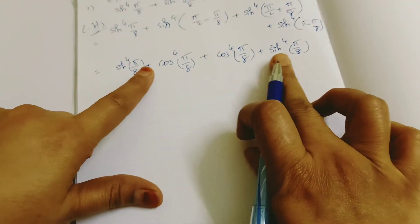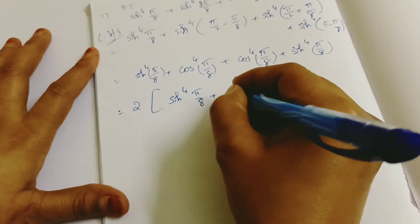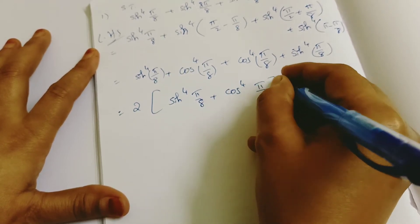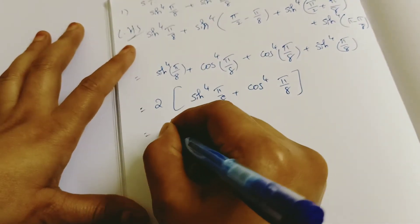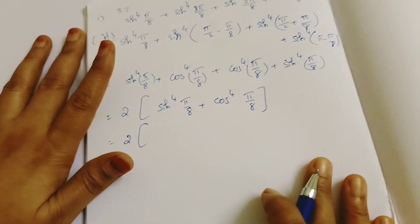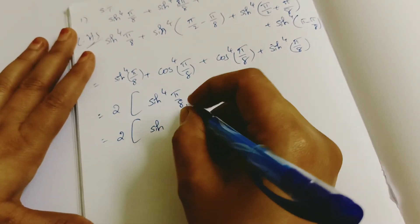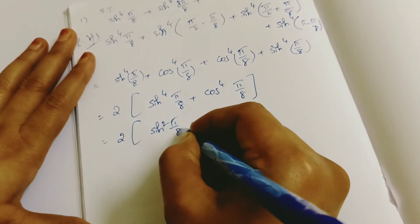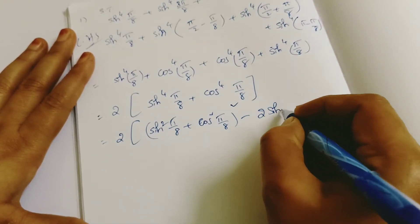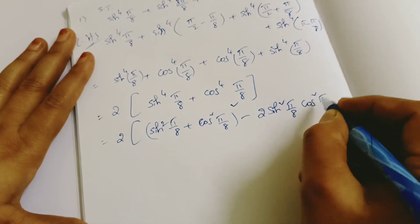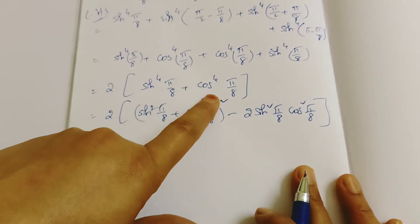Now see: there are 2 sin terms and 2 cos terms. So I am writing 2 × [sin⁴(π/8) + cos⁴(π/8)]. Now I am converting using the A² + B² formula. A² + B² = (A+B)² − 2AB. So I write [sin²(π/8) + cos²(π/8)]² − 2·sin²(π/8)·cos²(π/8). That is because A²+B²+2AB − 2AB cancels to give A²+B².